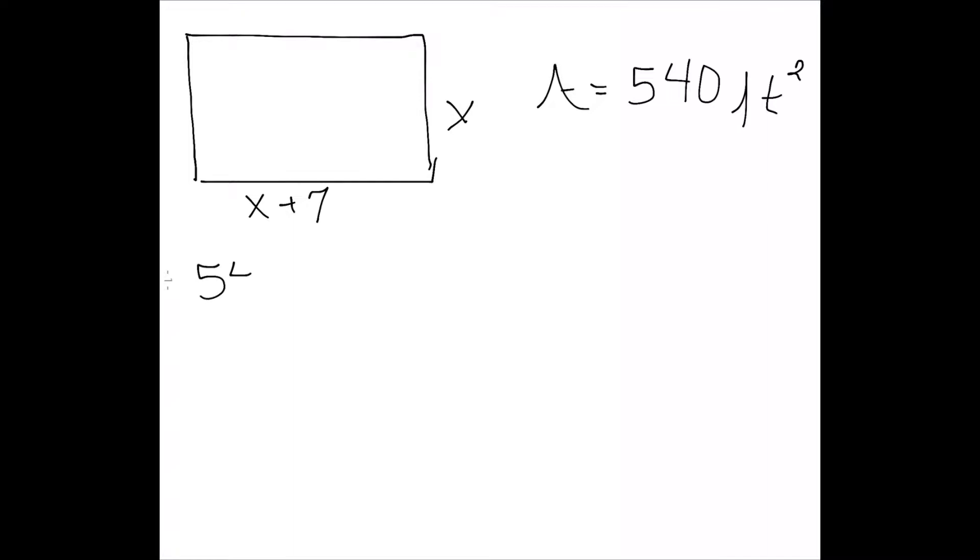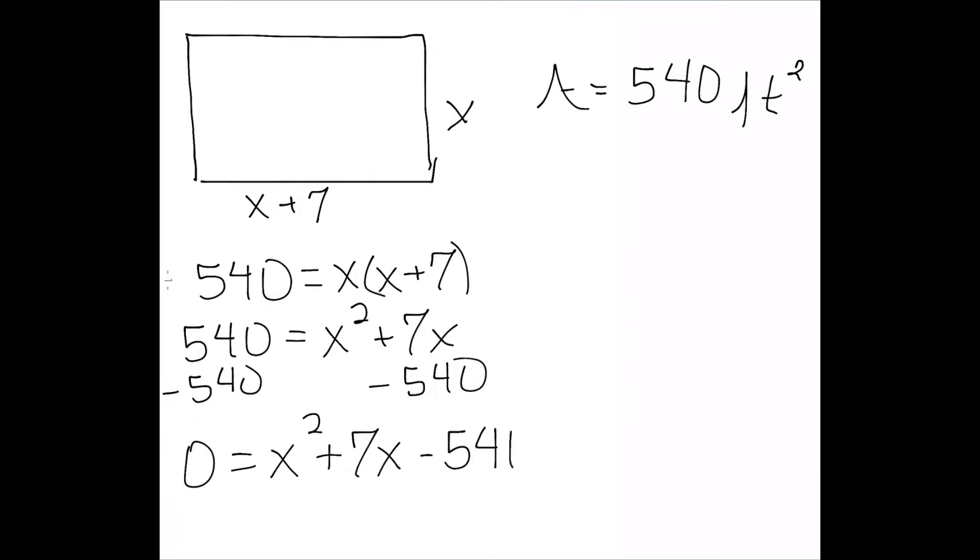So we know our area is 540, which is my length times my width. Multiplying out, I have 540 equal to x squared plus 7x. I can subtract 540 from both sides and get 0 equal to x squared plus 7x minus 540.